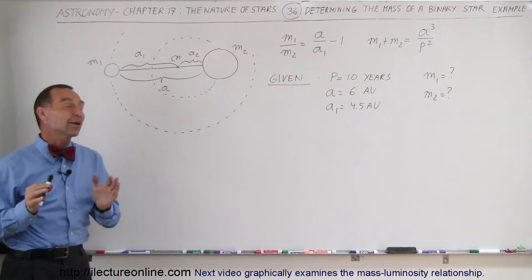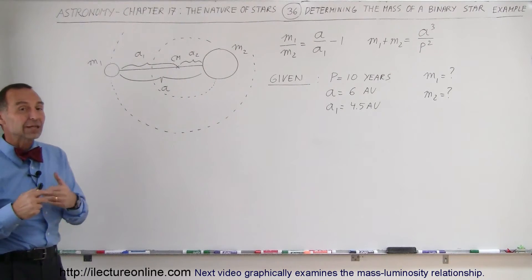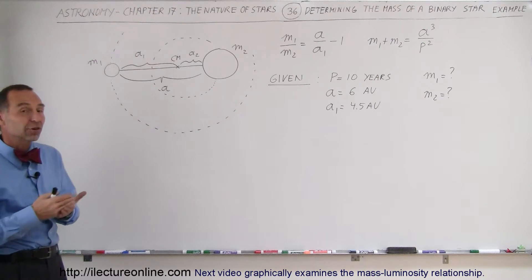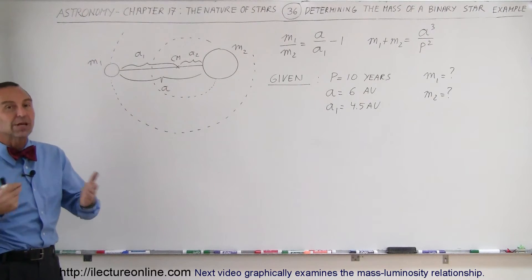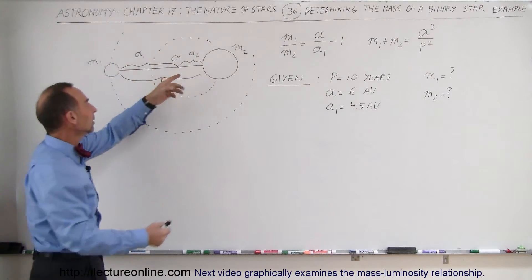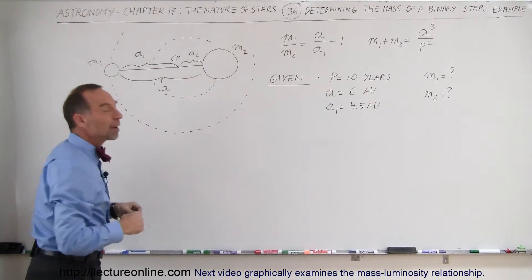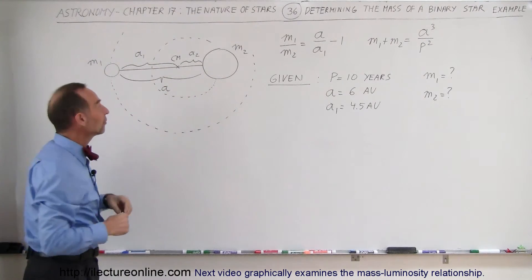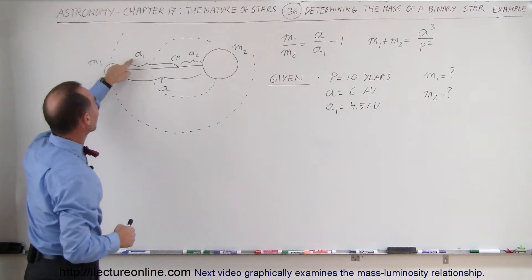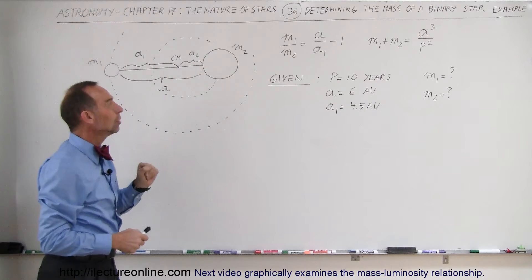Welcome to ElectronLine. Now that we know the two equations we can use to determine the mass of two stars in a binary star system, let's do an example. Here we have two stars, a small one and a large one. The distance between them is A — that's the semi-major axis of the orbit. The distance to the center of mass for the small one is A1, and the distance to the center of mass for the big one is A2.